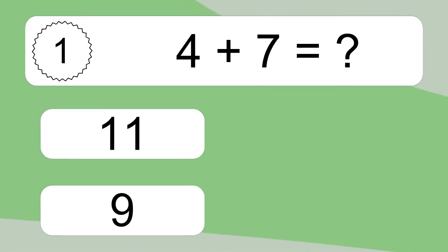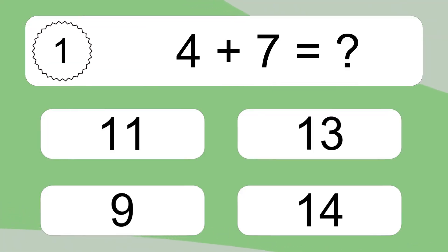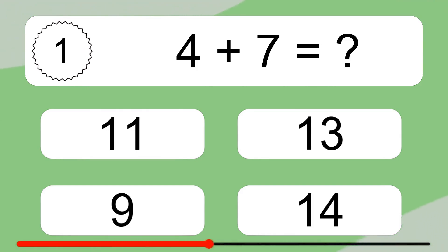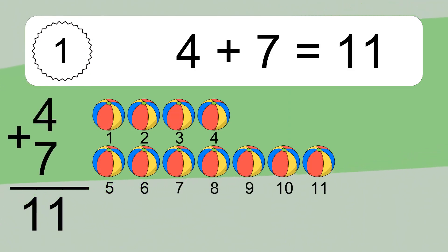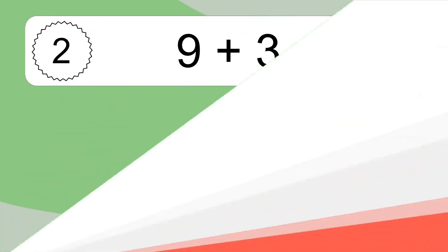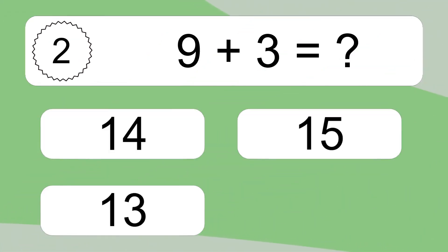4 plus 7 equals what? 1, 2, 3, 4, 5, 6, 7, 8, 9, 10, 11.